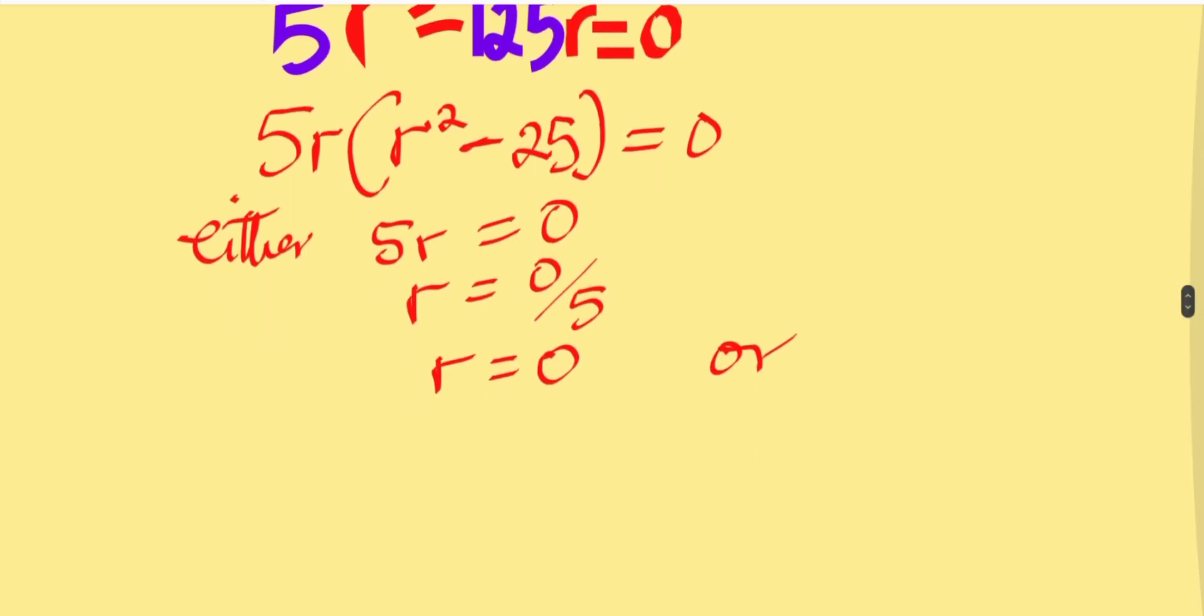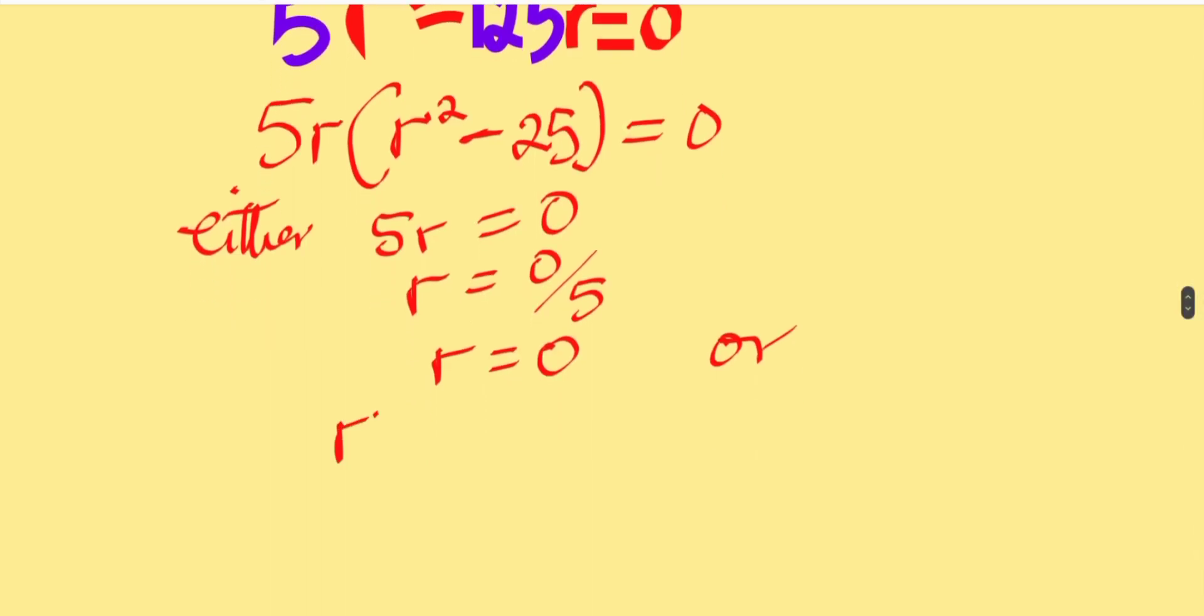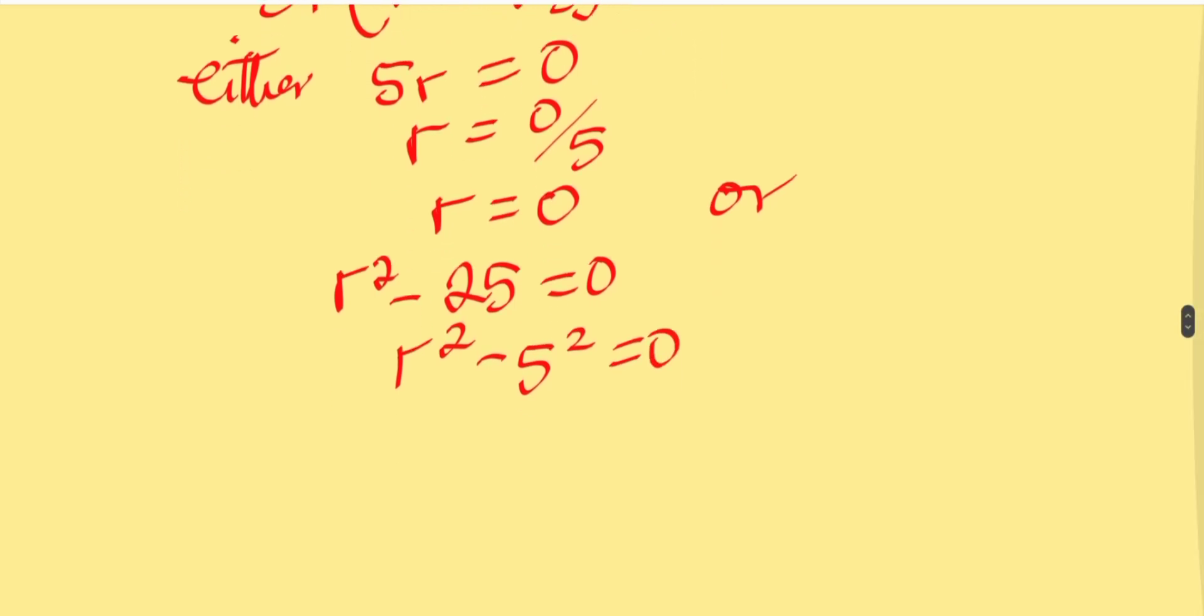Or the middle term in the bracket, R squared minus 25, is equal to 0. So R squared minus 5 squared is 0, because 5 squared is 25. This is now a difference of 2 squared...